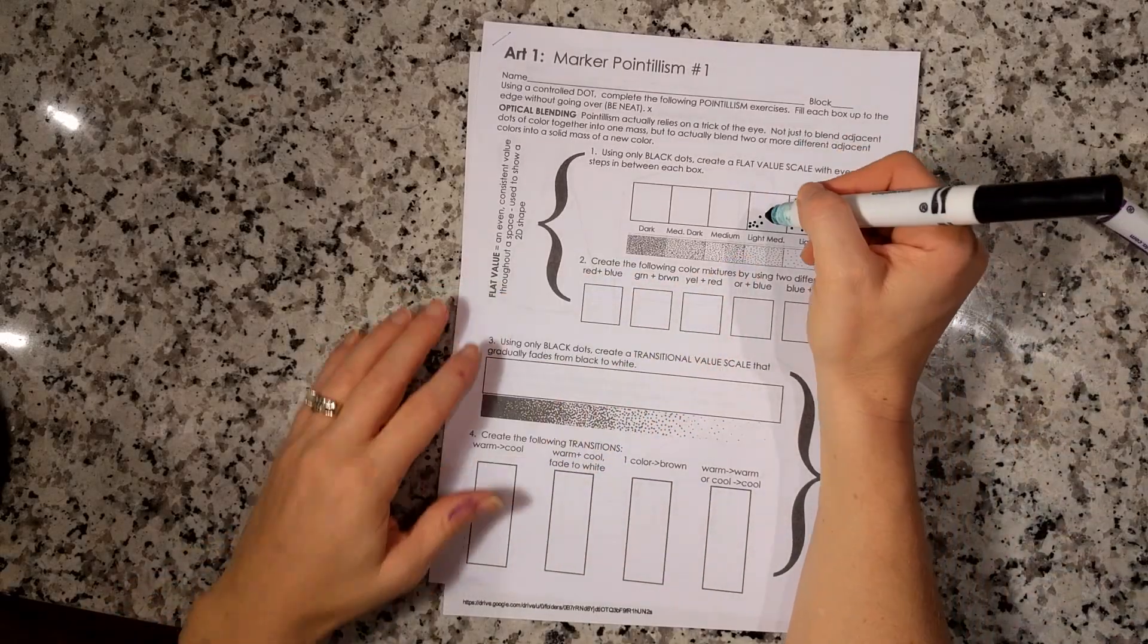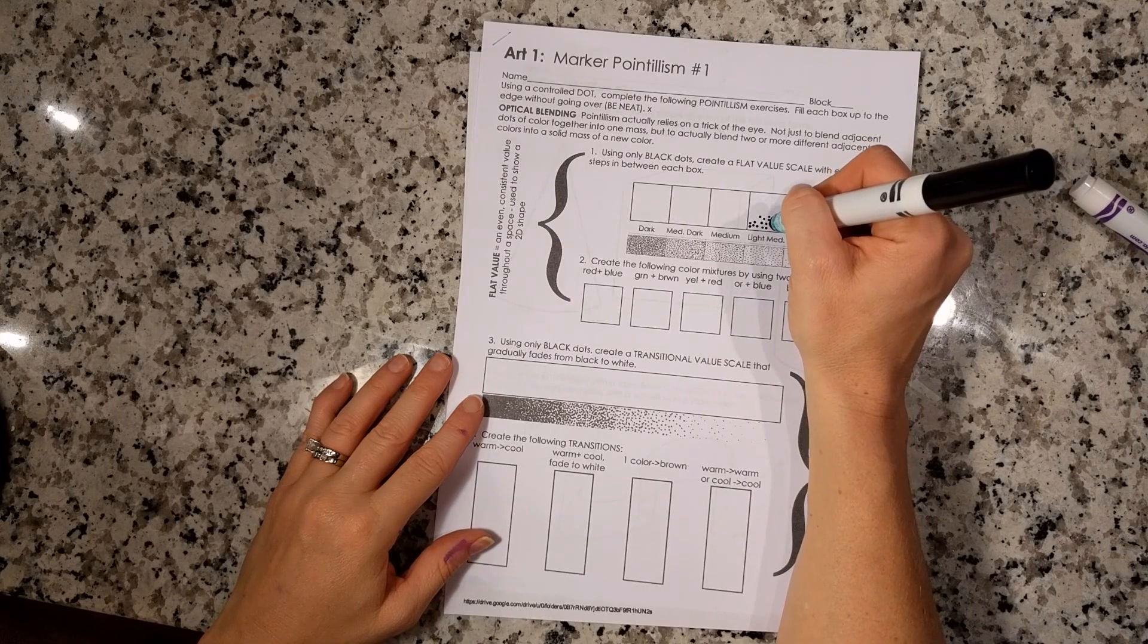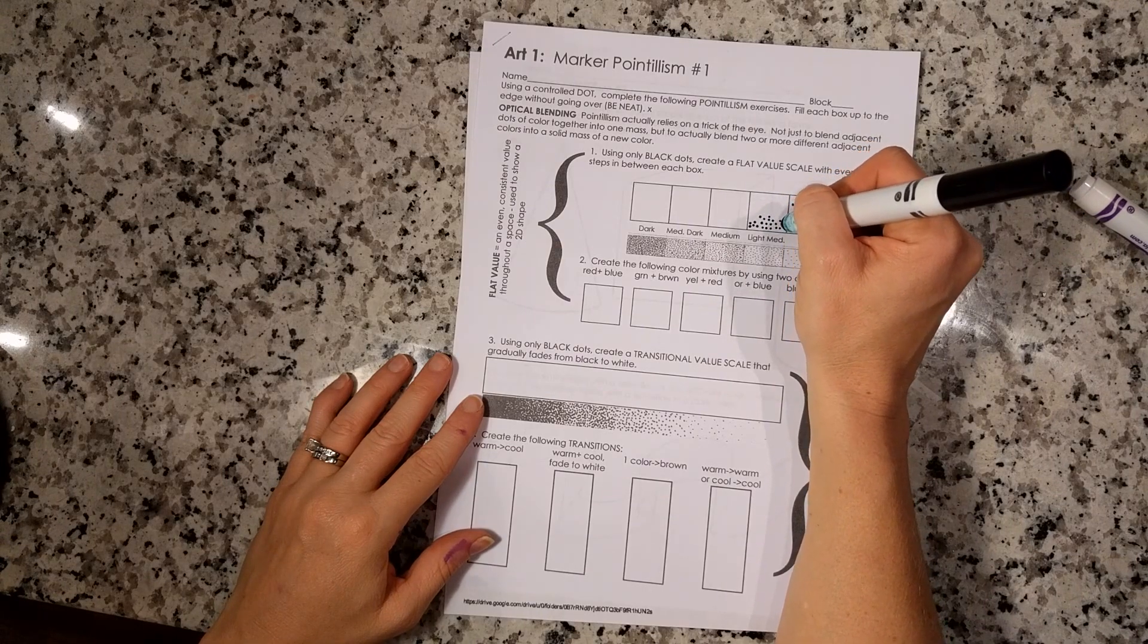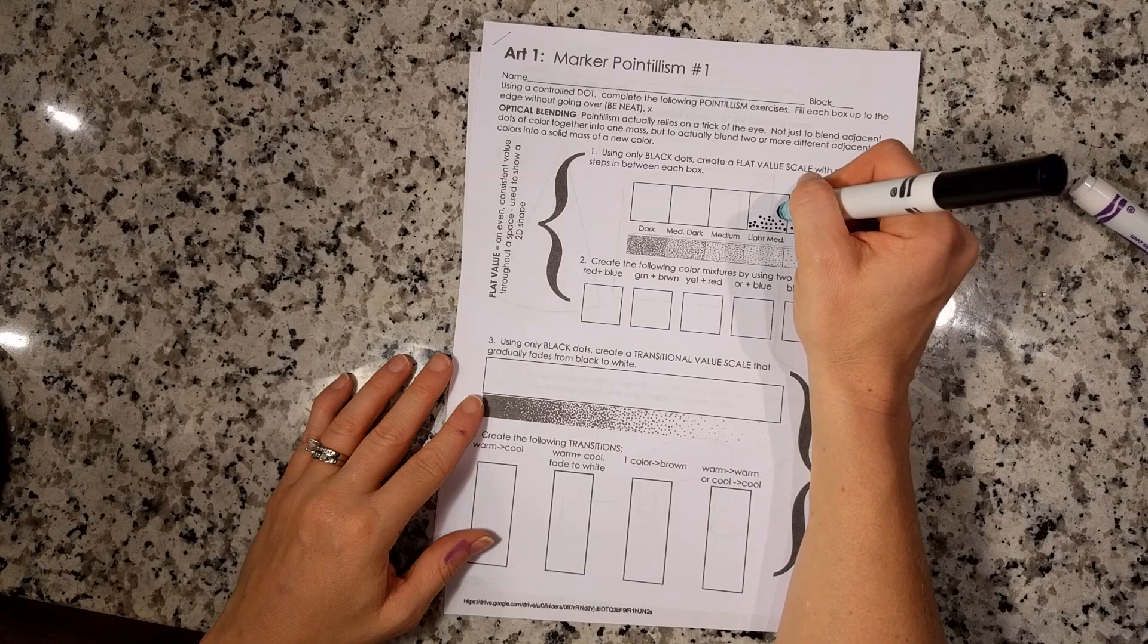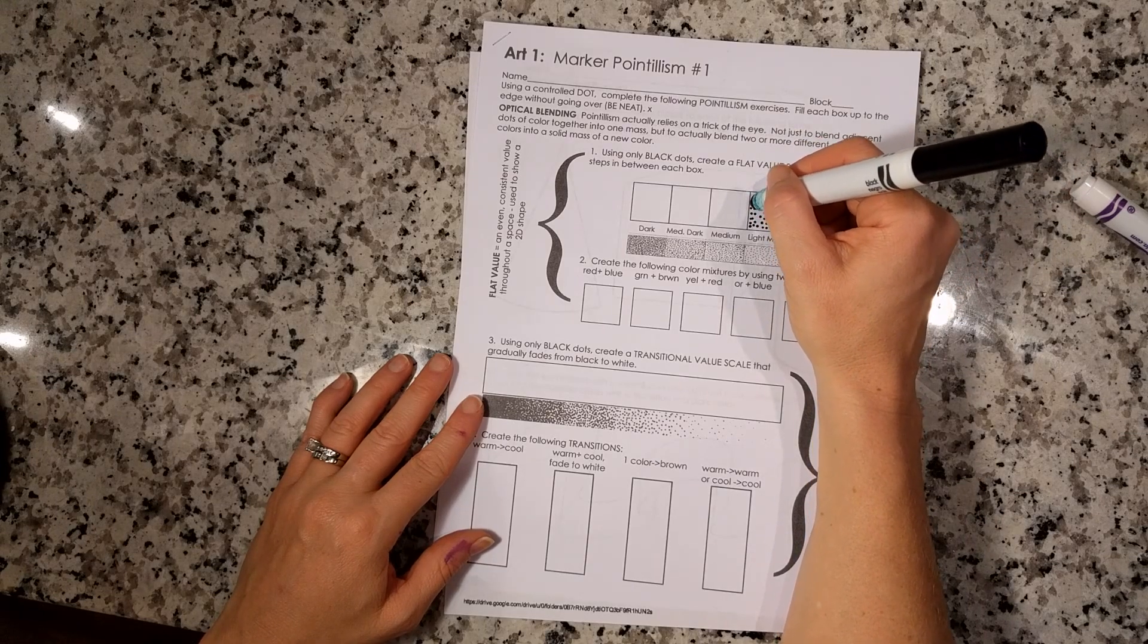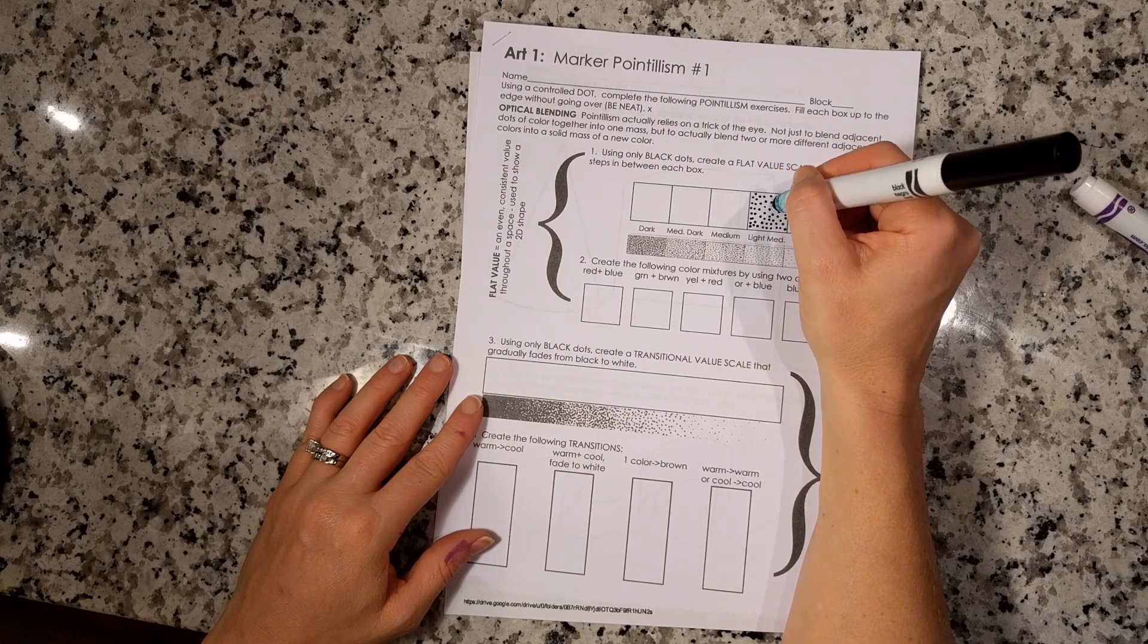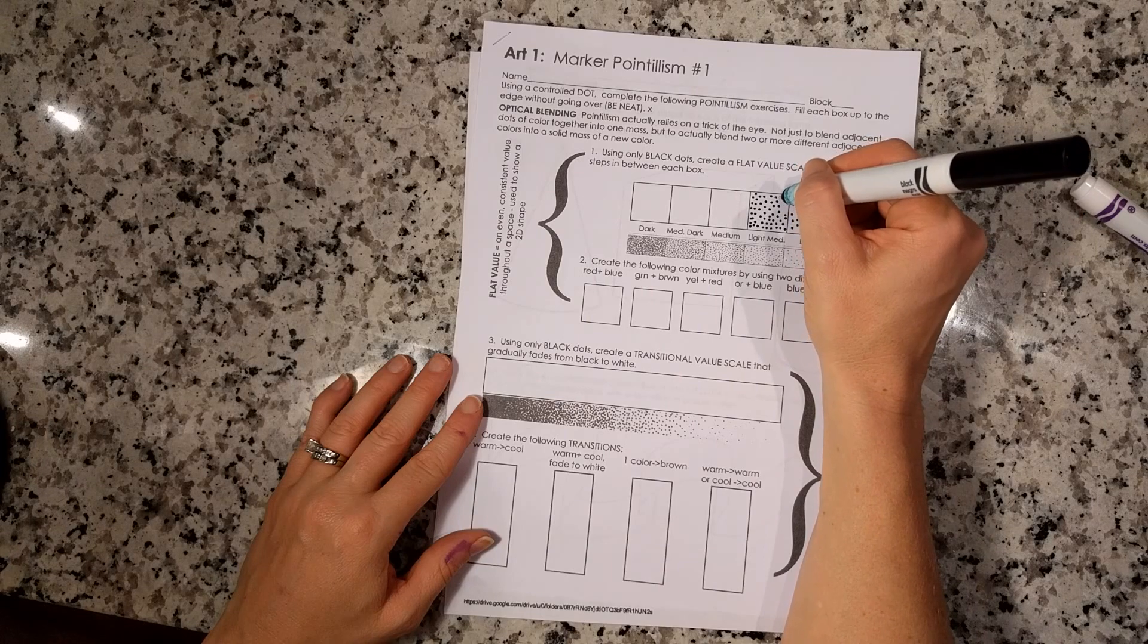For this next box, I'm placing the dots still about the same size. I'm being careful about where I'm putting them, just placing them closer together. I'm making sure I get all the way up to the edge of the box, and I want an overall consistent spacing of dots.